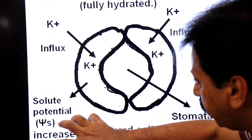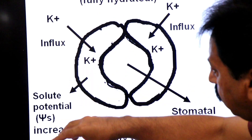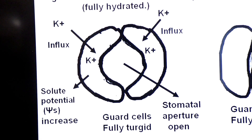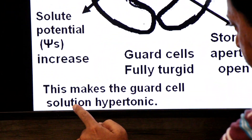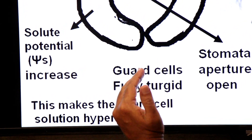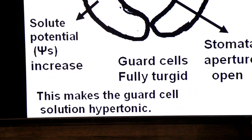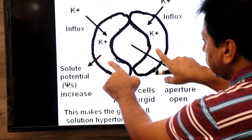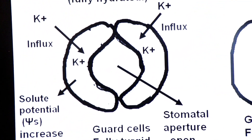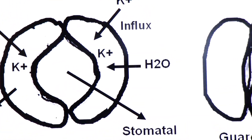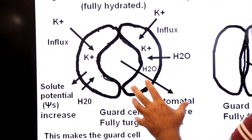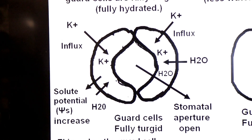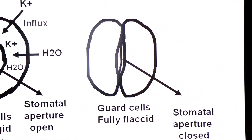Solute potential refers to the concentration of solutes in a solution or cell. As solutes increase, the guard cells become hypertonic — a solution having a high amount of salts or solutes. As salt concentration increases, osmotic pressure increases, meaning the ability to absorb water increases. More and more water comes inside the guard cells, they become fully hydrated and fully turgid, and stomata open.